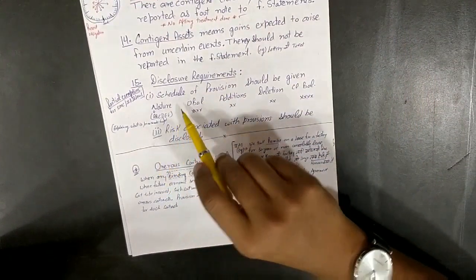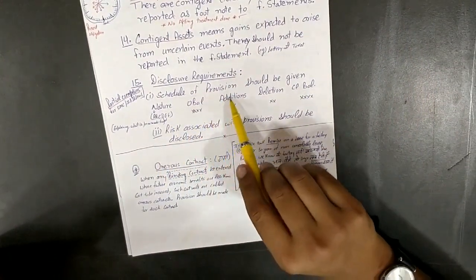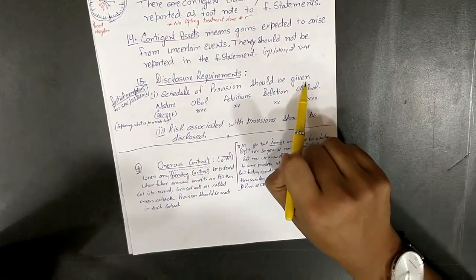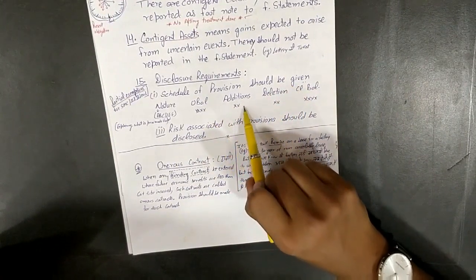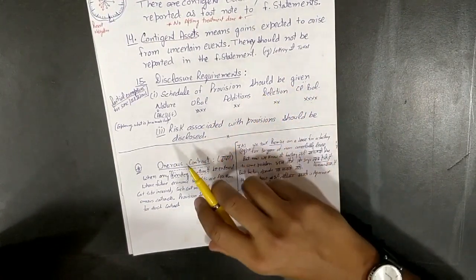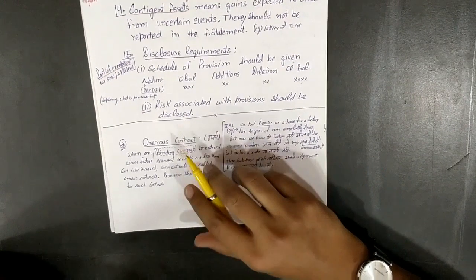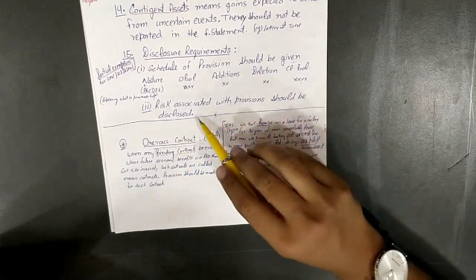Disclosure requirements for provisions: schedule of provision should be given - opening balance, addition, deletion, closing balance. Very simple. Risk associated with provision should also be disclosed.